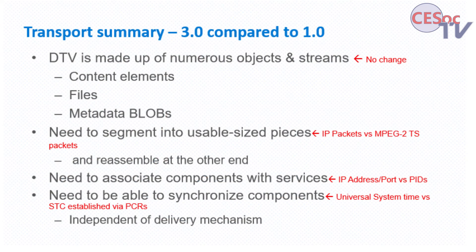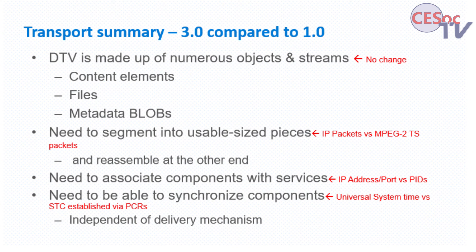Ad insertion using segmented delivery is — oversimplifying — really only a matter of changing the next file in the playlist: instead of playing this one, start playing that one. It is now possible to do that in almost every device. This opens a new revenue model for broadcasters that was previously unavailable; this could be a very, very big deal. Looking at what we need for transport, doing a comparison between 3.0 and 1.0: DTV is numerous objects and streams — that's not going to change. Segmenting into usable size pieces is now done with IP packets instead of MPEG-2 TS packets.